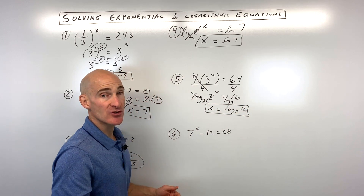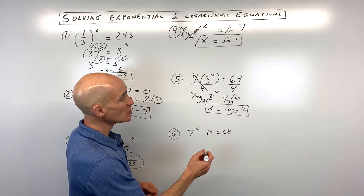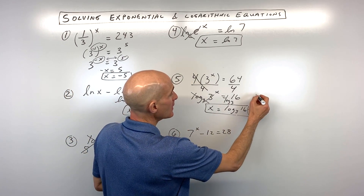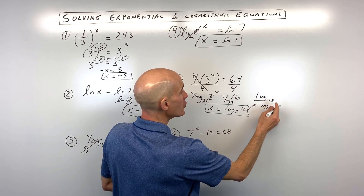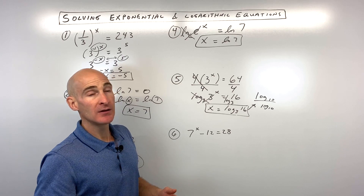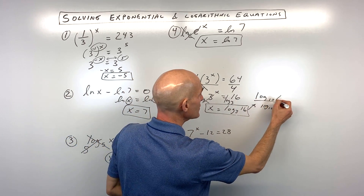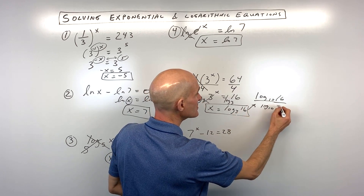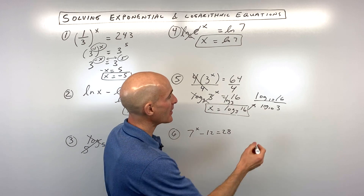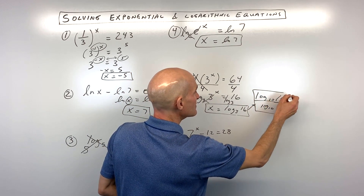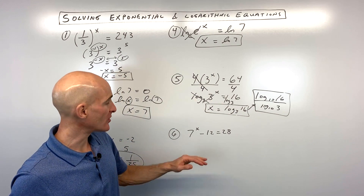If your calculator doesn't allow you to change the base, you can use the change of base formula. Use log base 10: 16 goes in the numerator, 3 goes in the denominator. It's easy to remember because 3 is a little bit lower and 16 is a little bit higher. These are equivalent — you can get a decimal approximation on your calculator.